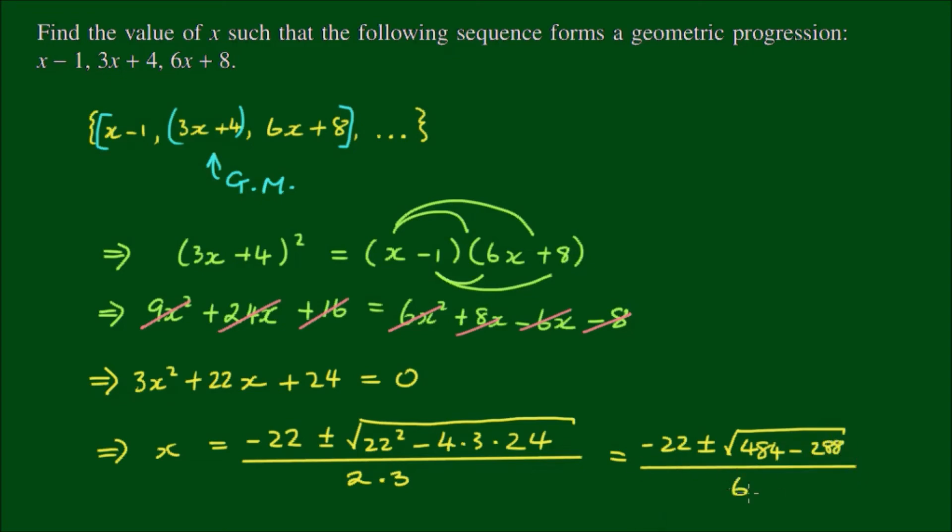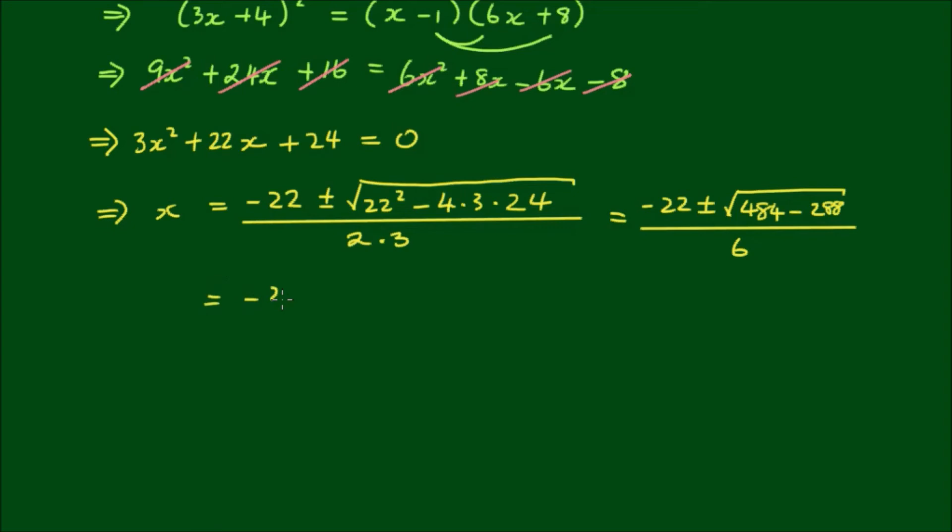which equals negative 22 plus or minus the square root of 196 over 6, which equals negative 22 plus or minus, now 196, the square root of 196 is 14. So we have negative 22 plus or minus 14 over 6. So that means if we do the subtraction and the addition and the division, we get in the first instance negative 22 plus 14 is x equals negative 8 over 6 or negative 4 thirds, or x equals, in the instance of negative 22 minus 14, so it's minus 36 over 6, which equals minus 6.